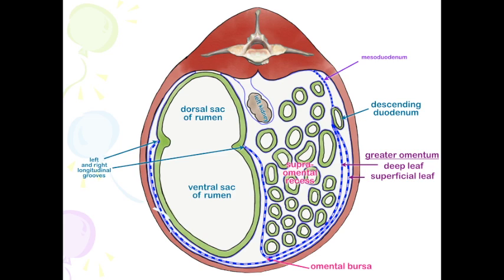It's very important to know what structures you will find in a paralumbar incision. On the bovine, from a left paralumbar incision, you're going to encounter the dorsal sac of the rumen, and the dorsal caudal blind sac is going to be more into the pelvic cavity. On the right side, you are going to encounter the descending duodenum, the mesoduodenum above it, and the superficial leaf of the greater omentum ventral to it. Thank you for your time.